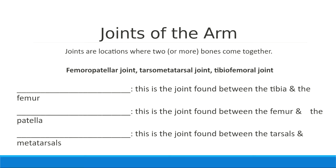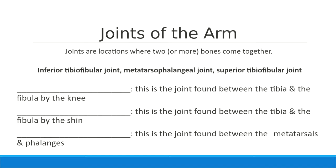More joints: femoropatellar — both bone names. Tarsometatarsal — tarsals and metatarsals. Tibiofemoral. The big idea here is: if the joint name looks like bone names, those are the bones it's in between. You don't have to spell these joint names — you just need to have an idea of where to find them. Make sure you can interpret their names to get an idea of where they are in the body.